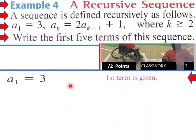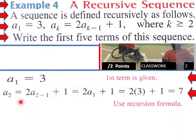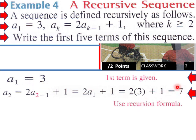We know a₁ = 3; this is our first term. So a₂ would be 2a₍₂₋₁₎ + 1, which equals 2a₁ + 1, so 2 times 3 plus 1 equals 7. This is using your recursion formula.